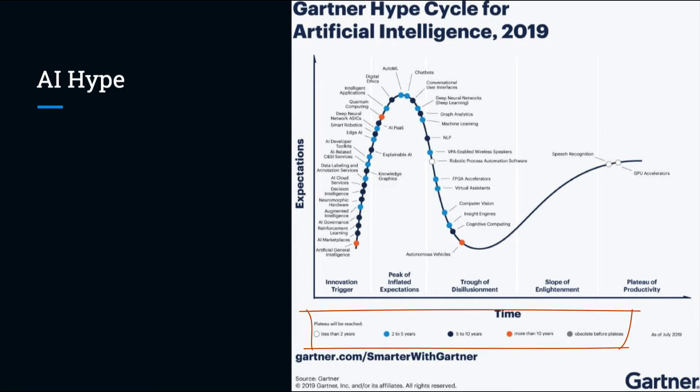The color code of the dots indicates the expected time until plateau. Notice chatbots are at the top of the cycle, next to conversational UIs. Here is NLP, and here are virtual assistants, probably about where they will eventually plateau.